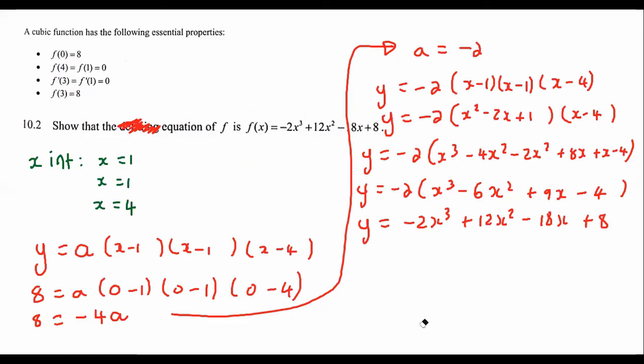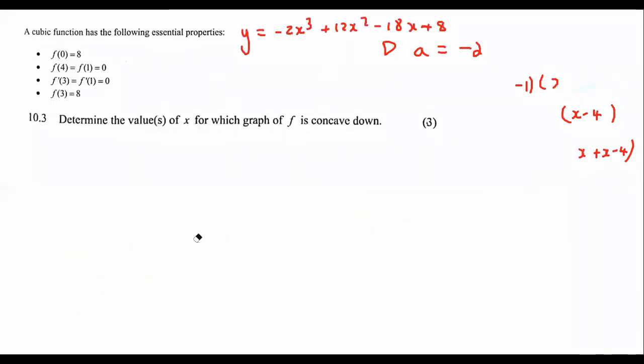So point is, if you have to work out the equation of a cubic graph and you have the x-intercepts, then you literally just make three brackets.